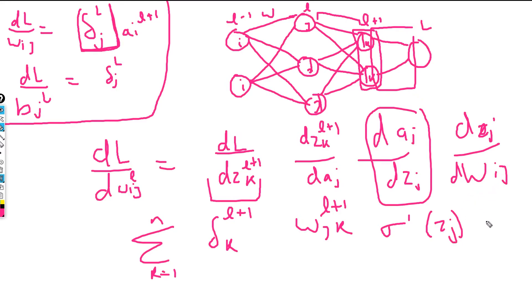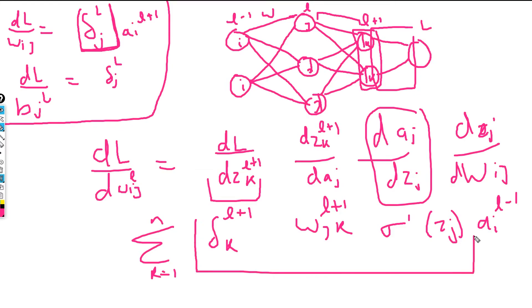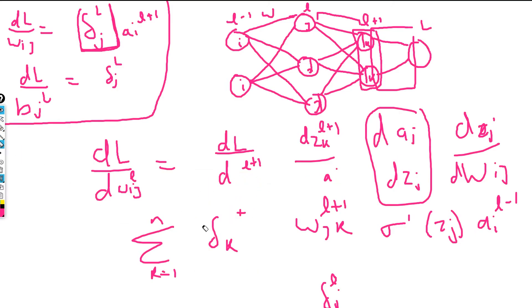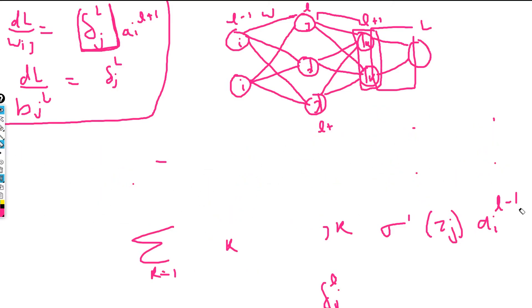This next part is the derivative of the sigmoid function of z_j, same as before. And the last part is a_i(l−1), because we are finding the gradient for this layer. We name this whole intermediate part delta_j of the lth layer.